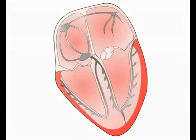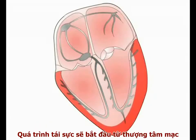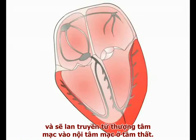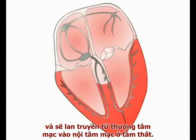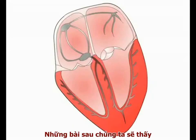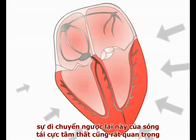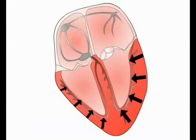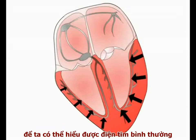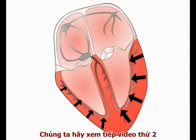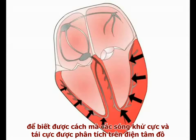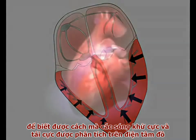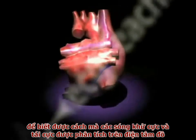As illustrated here, repolarisation begins in the epicardium and then spreads backwards from the epicardial to the endocardial surface of the ventricles. We'll see later that this retrograde spread of ventricular repolarisation is important in understanding the normal ECG readout. We will now go on in video 2 to show how the depolarisation and repolarisation waves are analysed to produce the normal ECG readout.